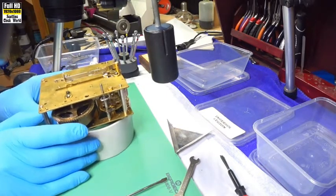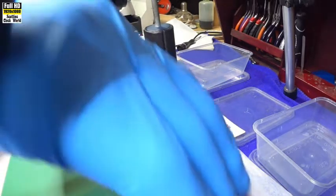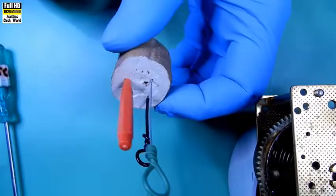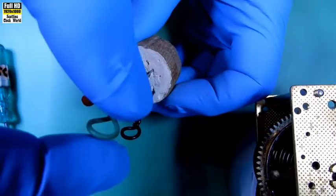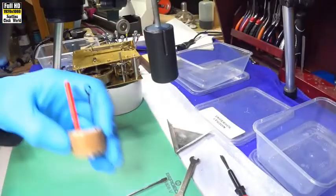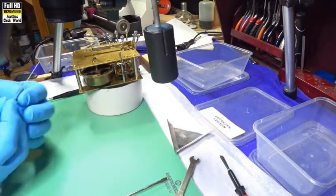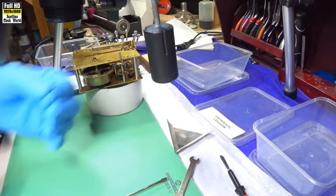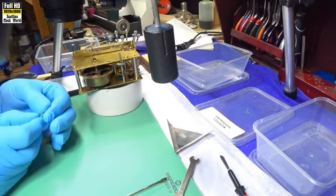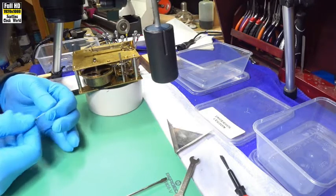Now, we're going to oil the movement. Select which oil we want. We'll use this one. It's pith wood. It's handy to keep your oilers in because it keeps the tips clean instead of having them lying around on the bench.